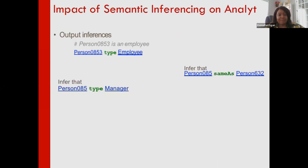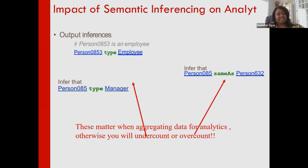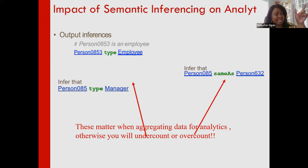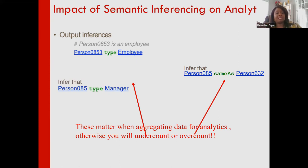Why does this matter for analytics? Without inference, when aggregating data you may either over-count or under-count. For the subclass examples, facts were not explicitly represented — we had to infer them — so without inference we would under-count employees or managers. For the inverse functional case, if we didn't recognize two entities as the same person, we would over-count. Semantics has a real impact on analytics correctness.